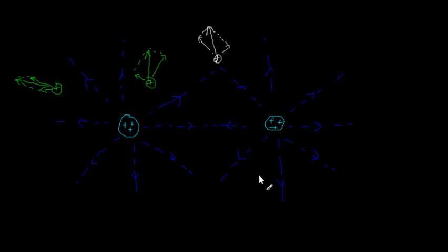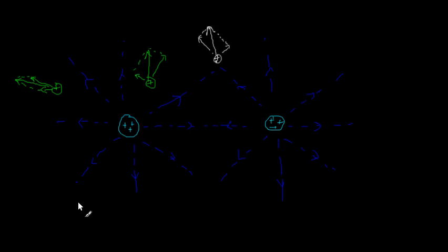There are certain standard results which people have worked out that we can learn and use. If we imagine doing this for all possible positions and working out the resultant strengths and directions all around here, what would the combined electric field look like? Let me try and draw that. So if I have a positively charged ball here and a positively charged glass ball there, the combined electric field would look something like this.